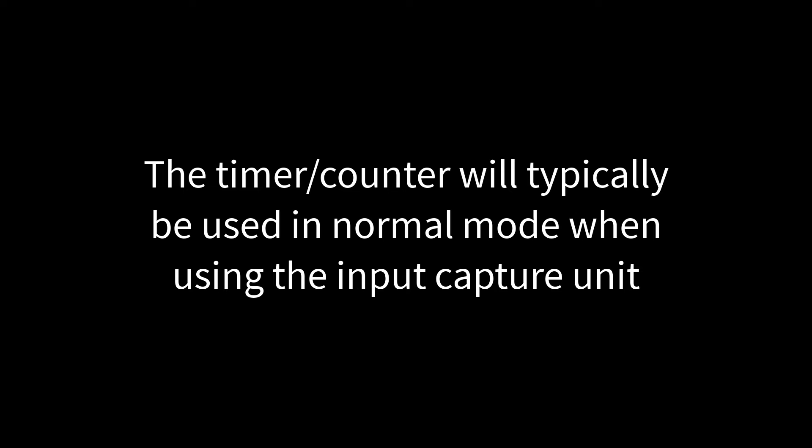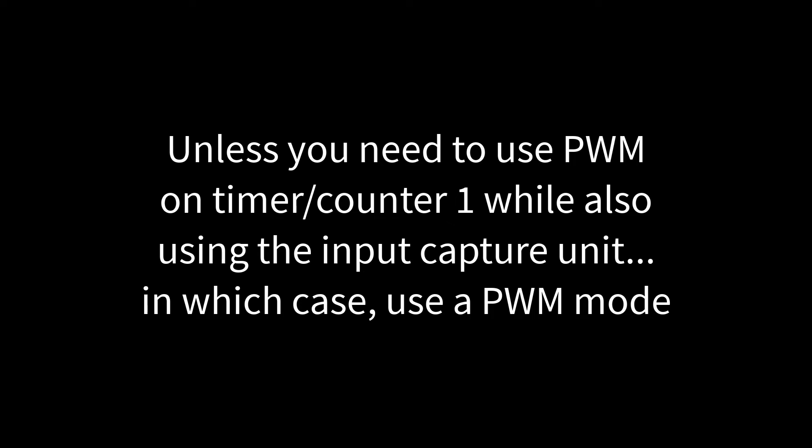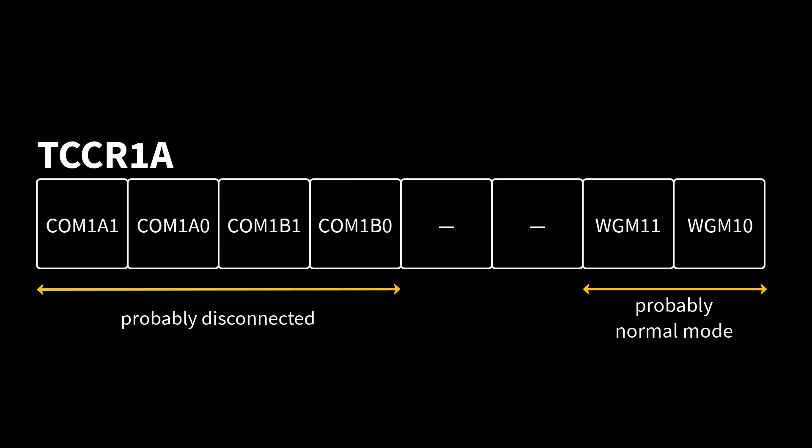Configuring timer counter 1 to use the input capture unit is not terribly difficult. We will very likely want to use timer counter 1 in normal mode, as there is no compelling reason not to count to max when using the input capture unit. Because we are collecting data from a square wave, we have no particular frequency in mind to use, and it makes no real sense to use CTC mode. So, the waveform generation mode should typically be normal mode, unless there is some compelling reason to use a different modality, such as needing to use timer counter 1 for pulse width modulation with the output compare unit, and then tagging along with the input capture unit. If you are not using the output compare unit, the COM bits in TCCR1A should be clear to disconnect the output compare pins.